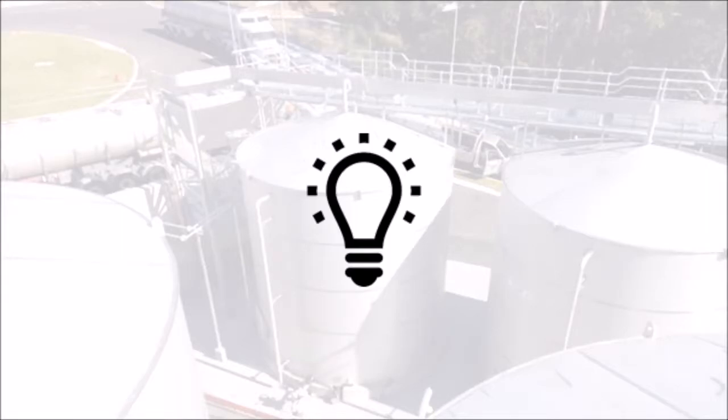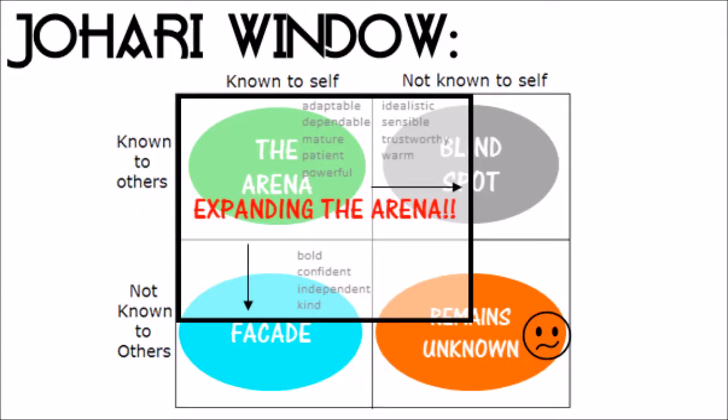Welcome back to the second episode on Johari's Window. This is LeaderLogic, and this time we're going to apply the Johari Window theory to understanding the scope of a major project. In the last episode we talked about how you could expand the arena area of the Johari framework to better understand your characteristics, how other people perceive you, and how to build relationships. That was the original purpose of Johari's Window — what we're going to do now is apply that to projects.